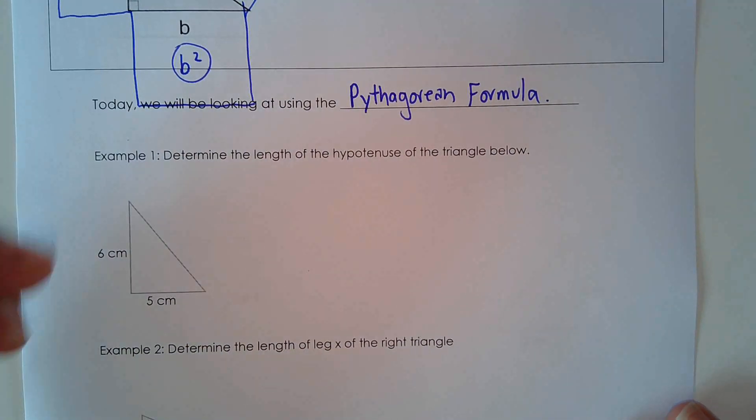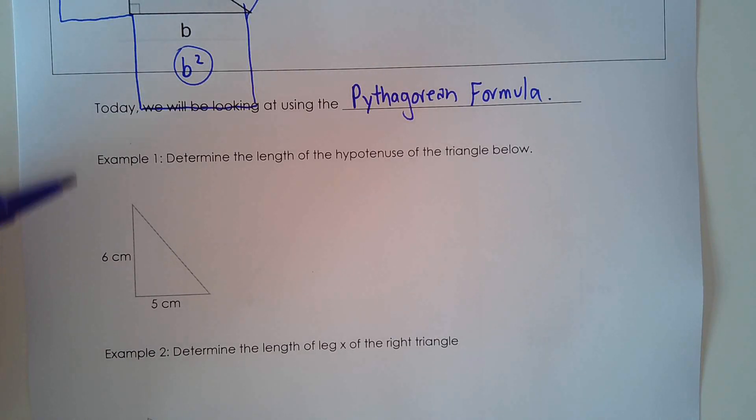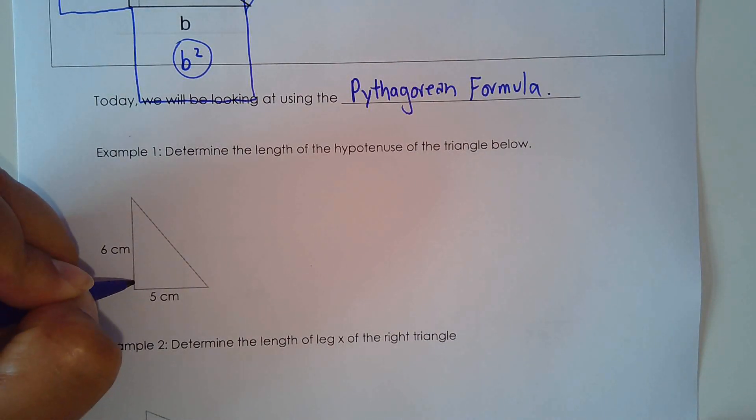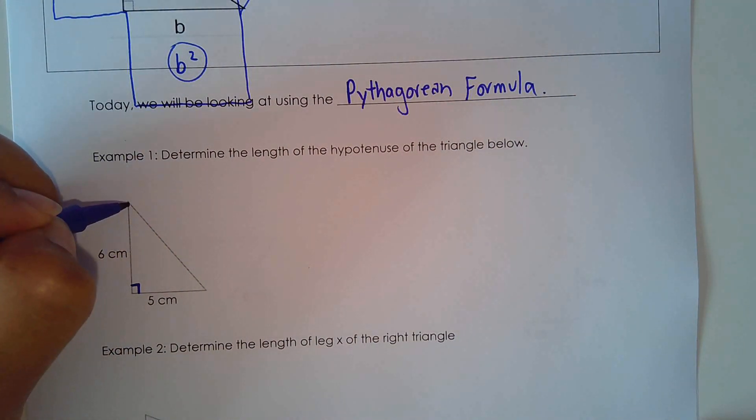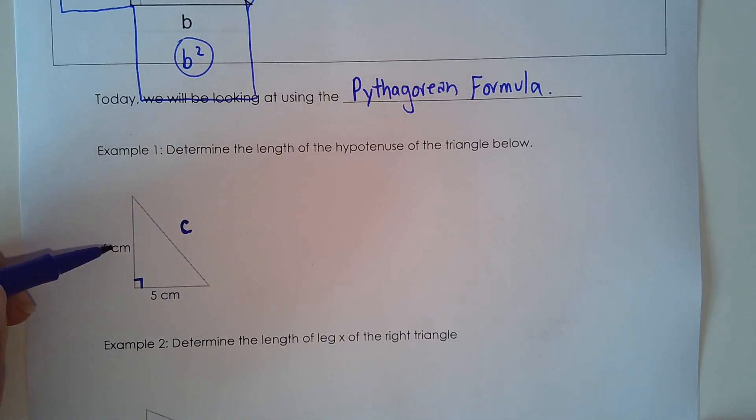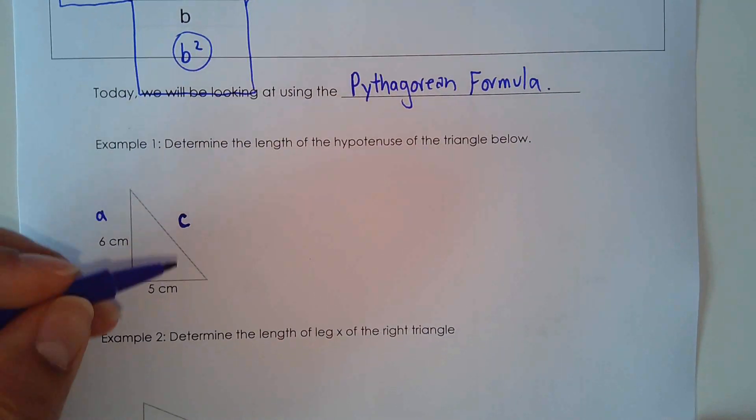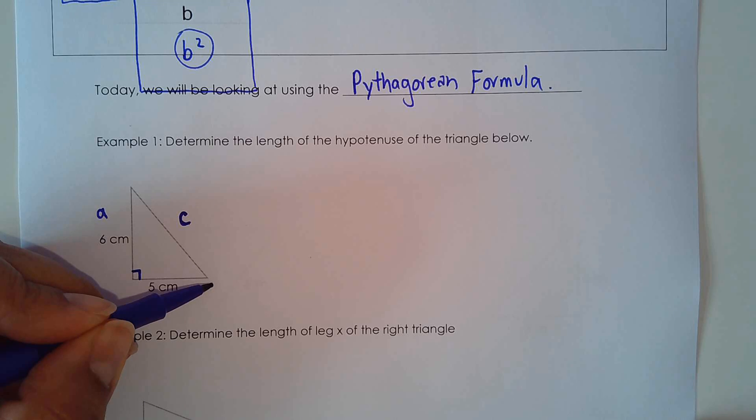Okay, so here we go. Example 1, determine the length of the hypotenuse of the triangle below. So I just need to put this symbol in here. I want to find this side here. And it's the hypotenuse. The hypotenuse is always C. And these legs, it doesn't matter which one I call side A or side B. So I'll call this side A and this one here, side B.